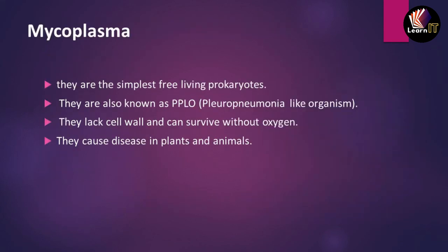The last topic is mycoplasma, which is also a type of Monera. It is basically the simplest free-living prokaryote. Mycoplasma is also known as PPLO — pleuro-pneumonia-like organisms. They lack a cell wall, can survive without oxygen, and mainly cause diseases in many plants and animals.